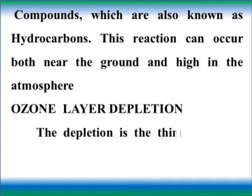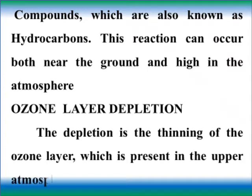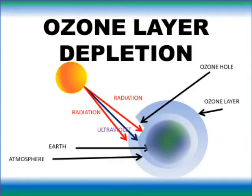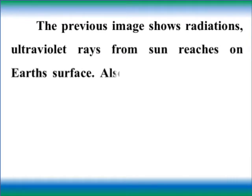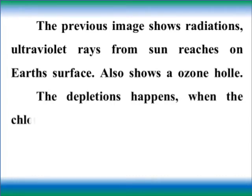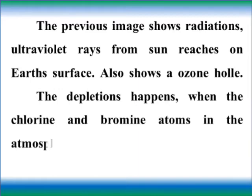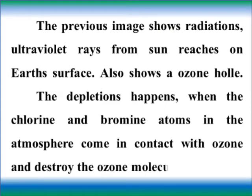Ozone layer depletion: Depletion is the thinning of the ozone layer which is present in the upper atmosphere. The previous image shows ultraviolet rays from the sun reaching earth's surface, and also shows an ozone hole. The depletion happens when chlorine and bromine atoms in the atmosphere come in contact with ozone and destroy the ozone molecules.